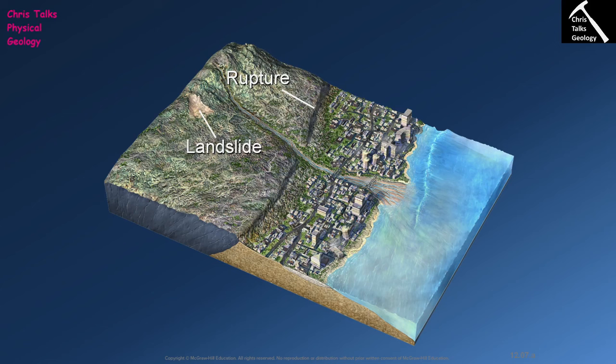Think of a situation like the Himalayas — lots of erosion, lots of loose sediment, and the capacity for big earthquakes to occur. When a large earthquake does occur, it's not too much of a surprise that these earthquakes can trigger very substantial landslides which are extremely damaging.